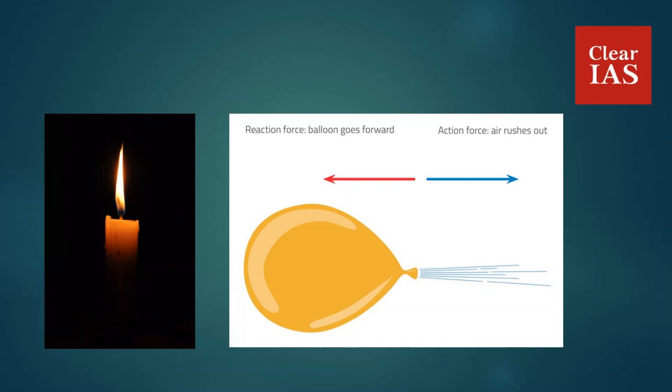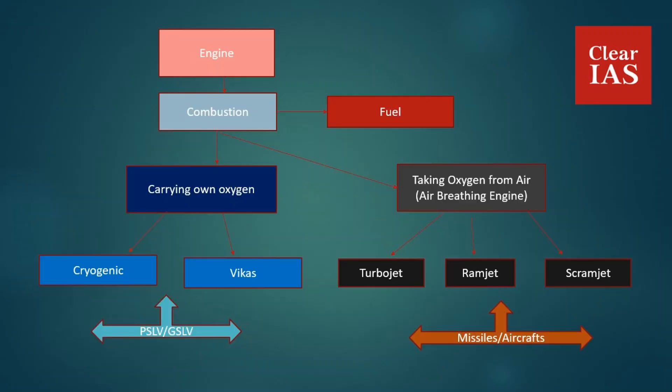We will now see in detail what exactly the difference between these engines is. You can see a chart which I will explain in detail. At the top of the chart you see 'engine.' What an engine does is combustion — there will be fuel and there will be oxygen, and combustion happens just like in the case of a candle.